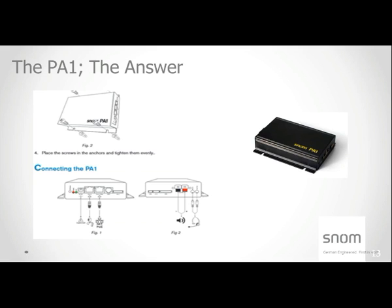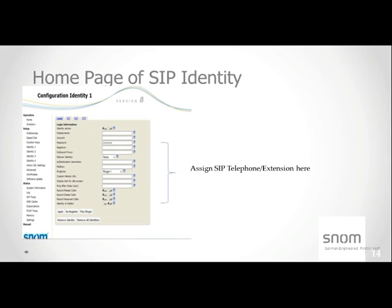The next screen shows the SIP identity configuration. For those familiar with SIP phones, this page will look very familiar. There are four different identities, and on the basic identity page 1 you really only need three inputs: the registration of your SIP PBX, and the extension username and password you assign for that particular SIP extension. You work this very similarly to how you would register a SNOM or any other SIP phone.